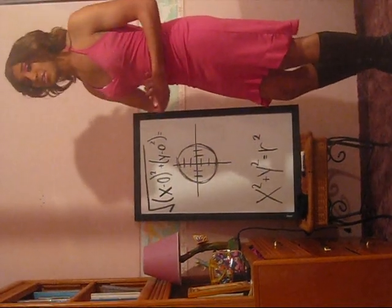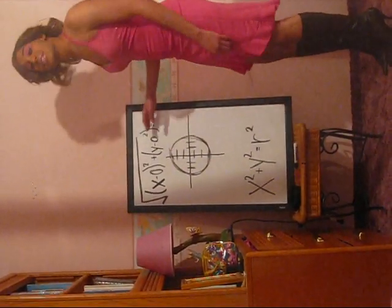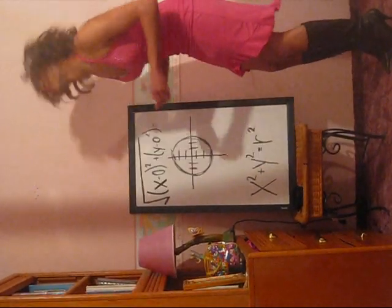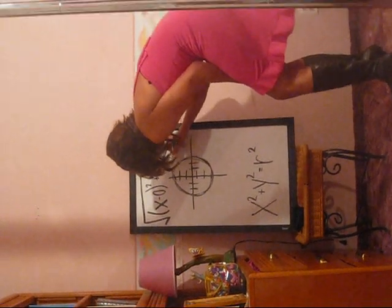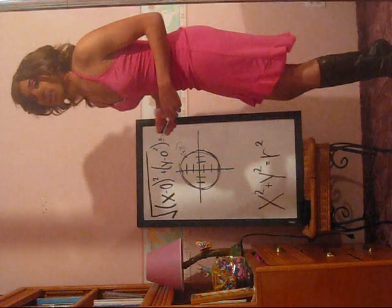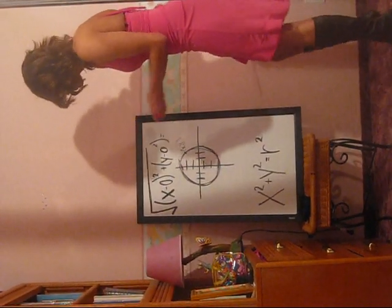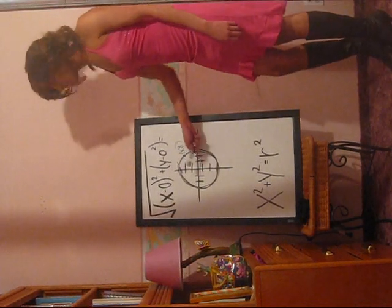To find the answer to our problem, we are going to use the distance formula. On a conic circle, it's usually given a point with an x and y coordinate. Our point is right here, so we're going to measure the distance from this point to our center.